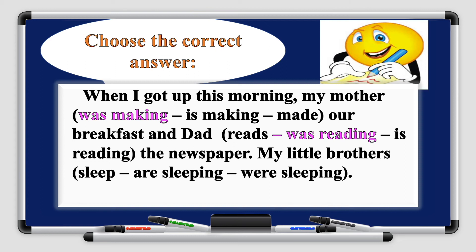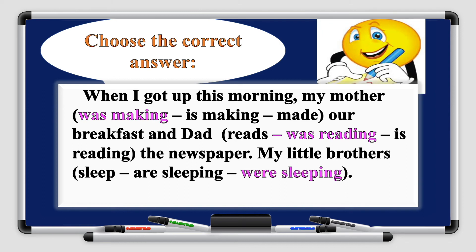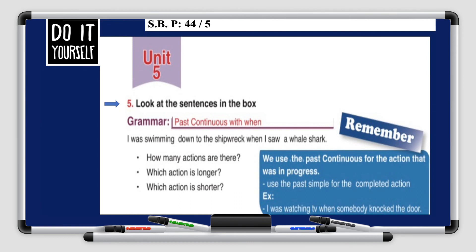For 'my little brothers ___ (sleep / are sleeping / were sleeping),' we choose 'were sleeping' because it's in the past continuous tense. 'Are sleeping' is present continuous. For a long action like sleeping, we use the past continuous tense. Now my dear students, try and do it yourself. You can do the exercise in your student book, page 44, exercise 5. Look at the sentences in the book.